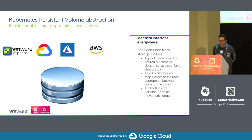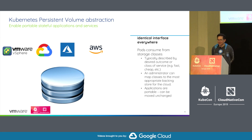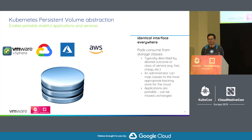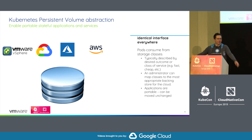The goal of the Kubernetes persistent volume abstraction was to provide an identical interface everywhere, abstracting out the storage so you can't tell where you're running. Done right, you should be able to write an app that can't tell whether it's running in AWS, Google Cloud, Azure, or on-prem on a vSphere hypervisor — nothing in the app changes. The persistent volume abstraction is designed to allow that kind of portability.